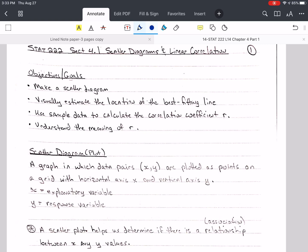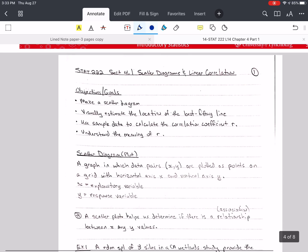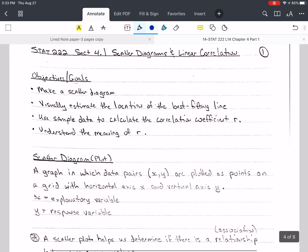The goals for this section are that we want to make a scatter diagram, visually estimate the location of the best-fitting line, use the sample data to calculate the correlation coefficient, and understand the meaning of R. I'm going to add that we want to test whether R is statistically significant.